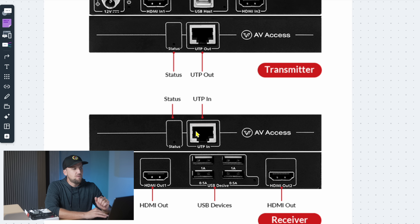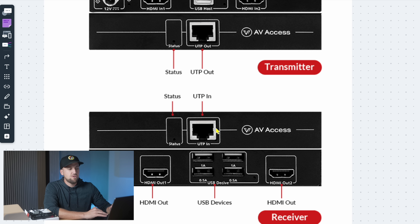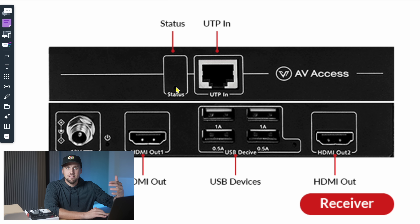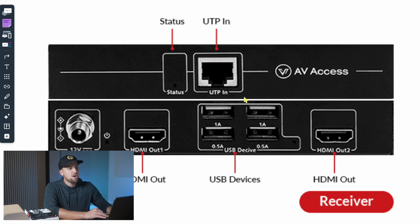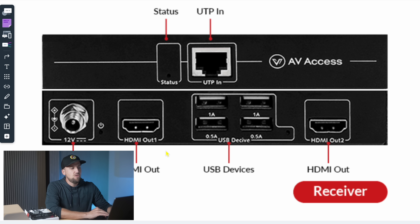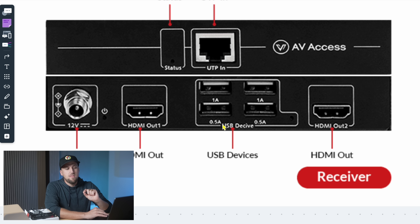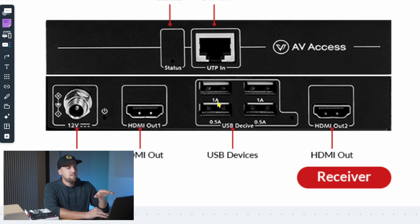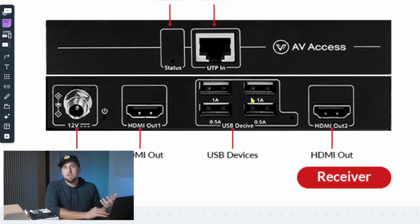Now let's look at the receiver side. You've got your Cat6 connection — same as on the transmitter side — and a status light that turns green when it's connected and working correctly. Down here on the receiver end, we've got two HDMI outputs for a dual monitor setup — you can also just use one monitor if you want. And then we have four USB ports. I recommend using the half-amp ports for your keyboard and mouse since they don't need to consume much power at all, and save the one-amp ports for larger USB devices like a Stream Deck or potentially a small audio interface if you need audio to and from that workstation.